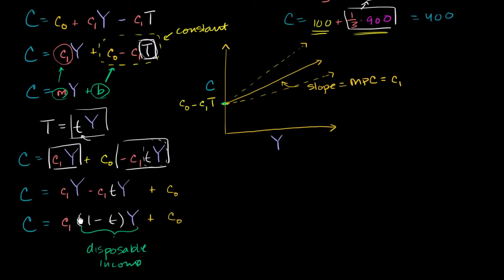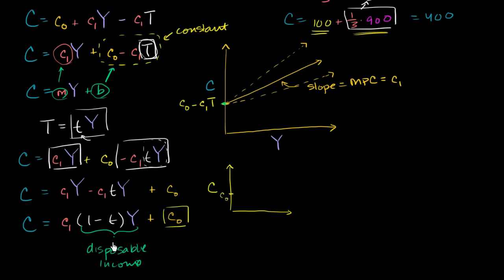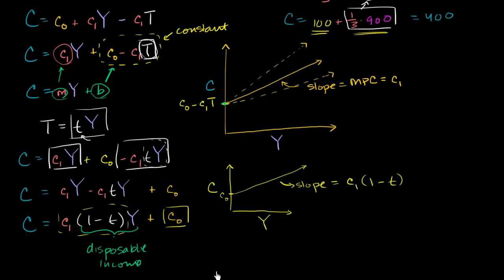If we wanted to write disposable income as some other variable, we could put that variable there. And then it becomes very simple to graph. If we want to graph it as a function of aggregate income, when we express taxes as a function of aggregate income, our vertical intercept — on the aggregate consumption axis — is C0, and our slope is c1 times 1 minus t. The independent variable is aggregate income.